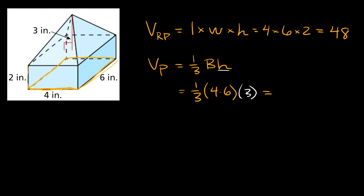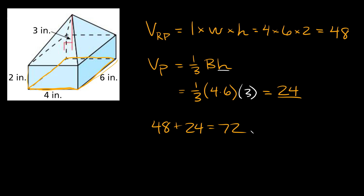So here, one-third times 3 equals 1, and then 1 times 4 times 6 equals 24. So the volume of the pyramid is equal to 24. In order to find the total volume, we just add these two numbers up: 48 plus 24 equals 72. Our units are inches cubed — don't forget your cubic exponent because volumes are three-dimensional.